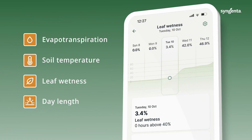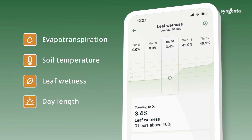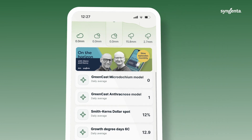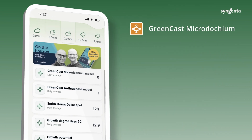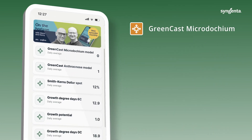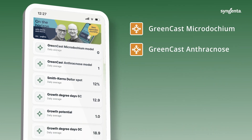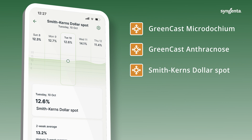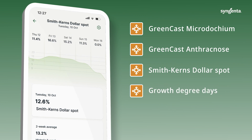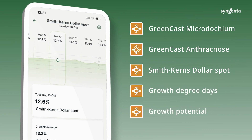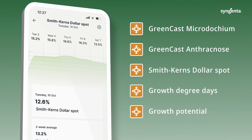In addition, we've also included a load of model data — things like the Greencast Microdochium model, the anthracnose model, the Smith-Kearns model, growth degree days, growth potential — all the things that can help you make good decisions.